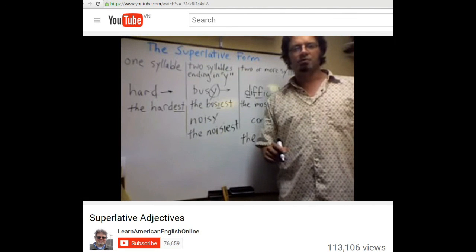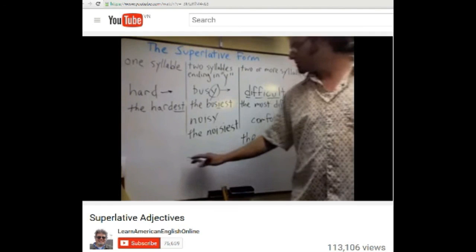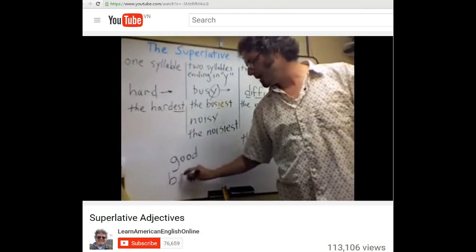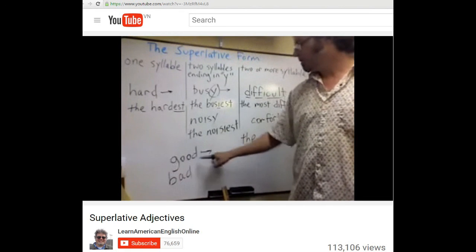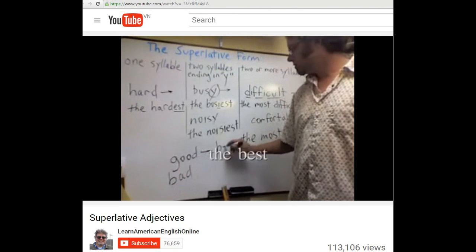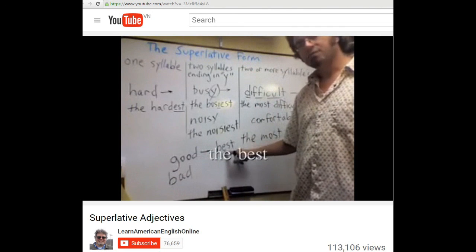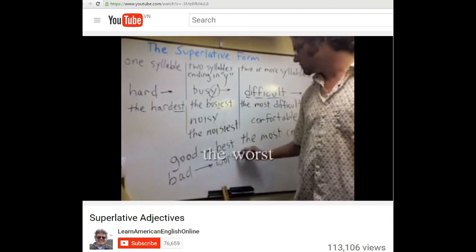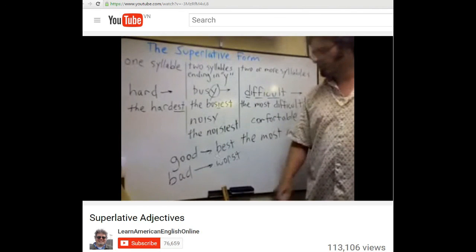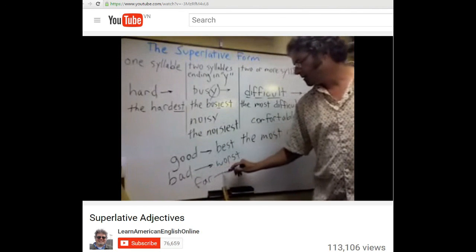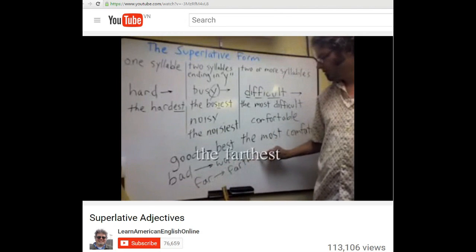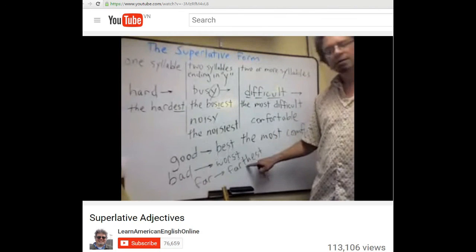There are also some irregular adjectives such as good and bad. To make the superlative from good, use best, the best. And for bad, use worst, the worst. There's also far, far becomes the farthest. In this case, you have to add the th.